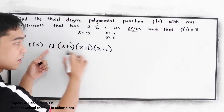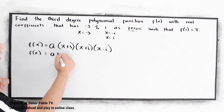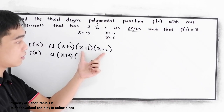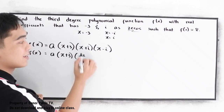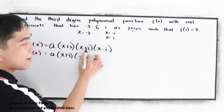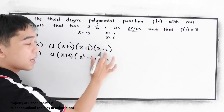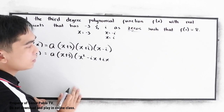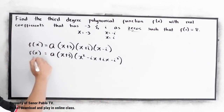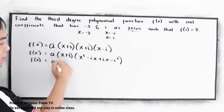Now, this will not affect our factors. So, solving: f of x is equal to a times x plus 3, times the quantity x plus i, times x minus i. We need to FOIL x plus i and x minus i: x times x gives x squared, x times negative i gives negative ix, positive i times x gives positive ix, and positive i times negative i gives negative i squared.